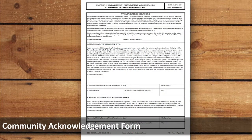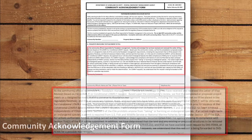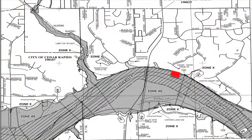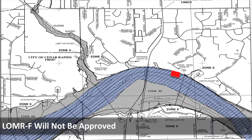As part of the LOMR-F request, the community must sign a Community Acknowledgement Form stating that they are located at or above the base flood elevation. It must be shown that the land and any proposed structures that will be constructed on it will be reasonably safe from flooding. It is important to note that FEMA will not approve the request for LOMR-F if the property is located within the floodway.